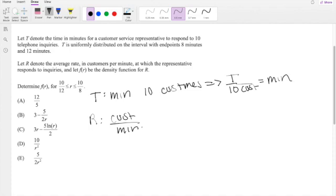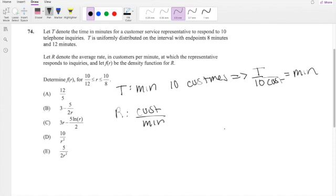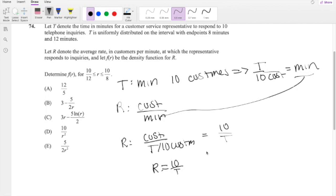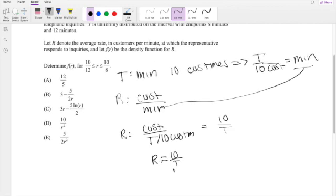I just put the 10 customers on the other side. And replacing minutes in here, you get R equals customers per T over 10 customers. Bringing that 10 customers to the top, you get this equals 10 over T. So the relationship between R and T is that R equals 10 over T.